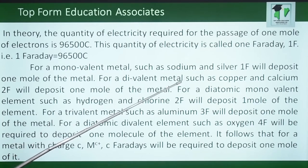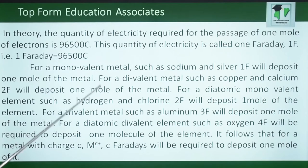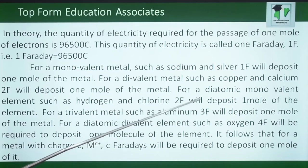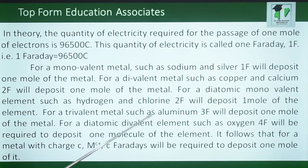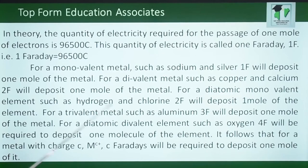For a divalent metal such as copper and calcium, 2 Faradays will deposit 1 mole of the metal, meaning 2 times 96,500 coulombs will deposit 1 mole of copper or calcium. For a diatomic monovalent element such as hydrogen and chlorine, 2F will also deposit 1 mole of the element. For a trivalent metal such as aluminum, 3F will deposit 1 mole of the metal. For a diatomic divalent element such as oxygen, 4F will be required to deposit 1 molecule of the element.